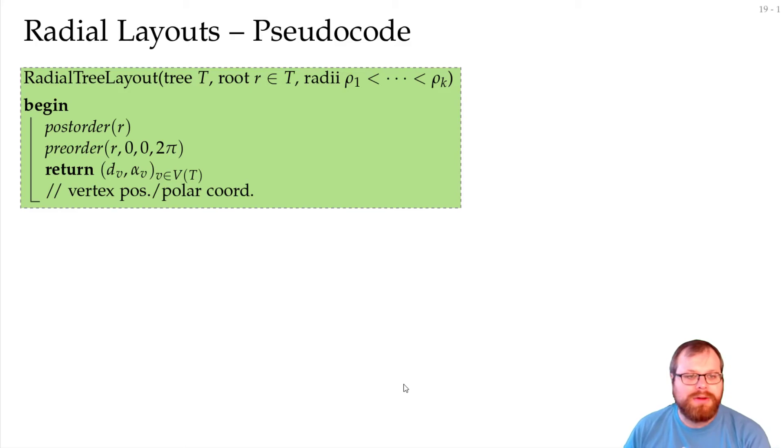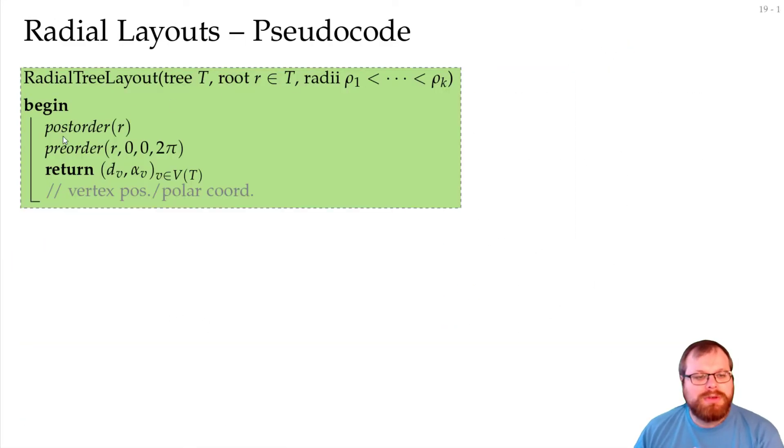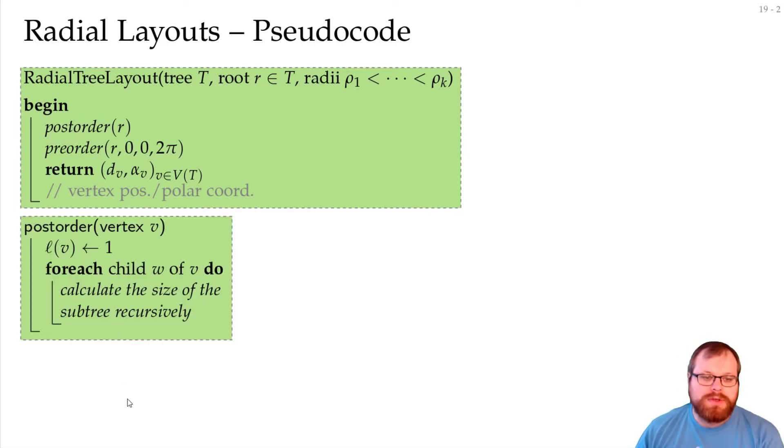Let's try to write down the algorithm. So our input for the radial tree layout is a tree with a root and we have the radii of our circles. We again first want to do a post-order and then a pre-order, that's what we also did for the layer drawings. And then we return for every vertex the polar coordinates. So what is the distance to the root and what is the angle, which is this angle here. What do we do in the post-order and then the pre-order traversal?